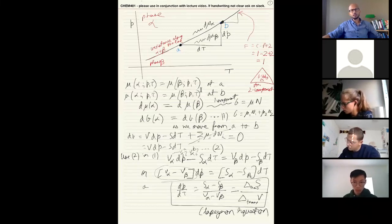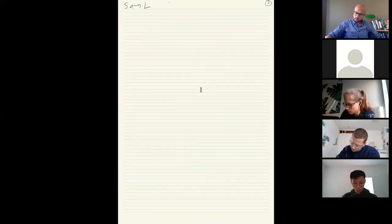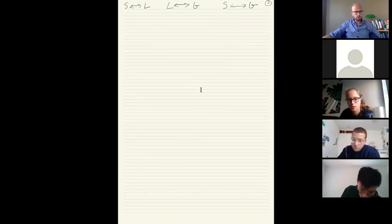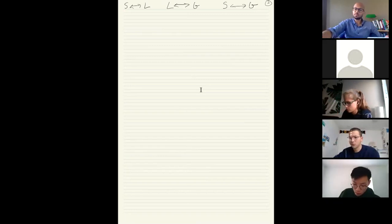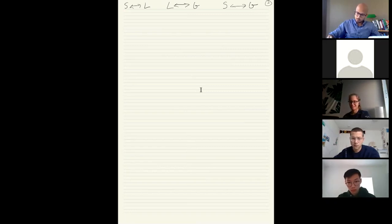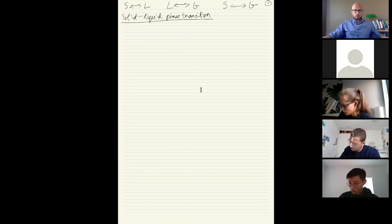Let's use the Clapeyron equation to look at three common classes of phase transition: solid-to-liquid, liquid-to-gas, and solid-to-gas. Last time I covered solid-to-liquid in a rushed manner — I'll go through it again, and I'll show you why ice skating is not an example of localized melting. I'll also post some very recent research articles on Slack about why ice skating actually works, which is still an open question.